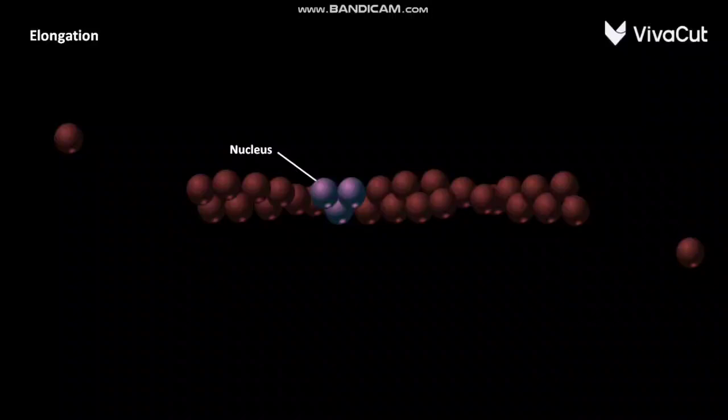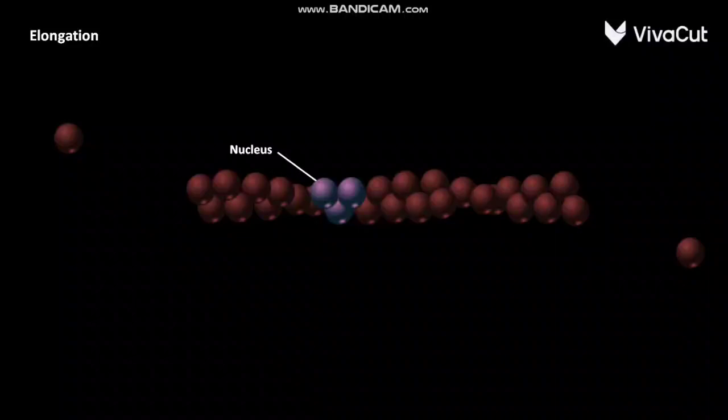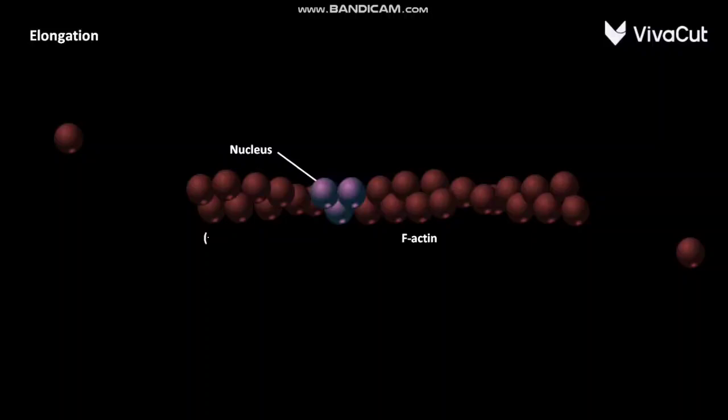As shown in this video, actin filaments grow faster at plus-ends and slower at minus-ends. As a result, the filament length increases. This is the F-actin filament having a minus-end and a plus-end.